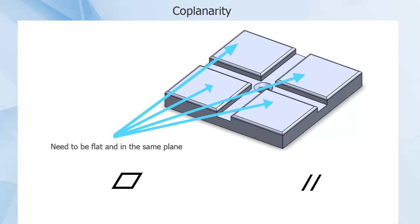Flatness and parallelism might come to mind as possibilities for control, but flatness does not control orientation, so each surface could be at different angles while still being flat.